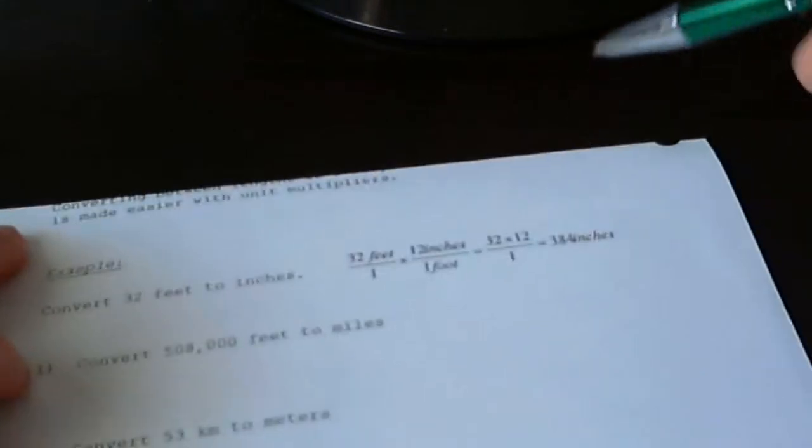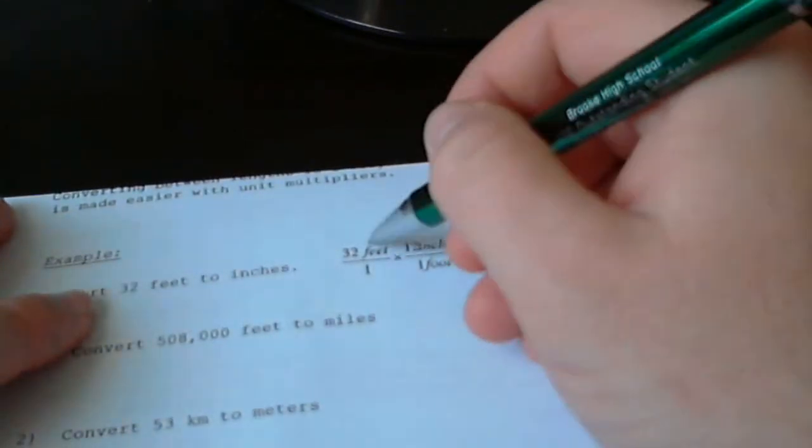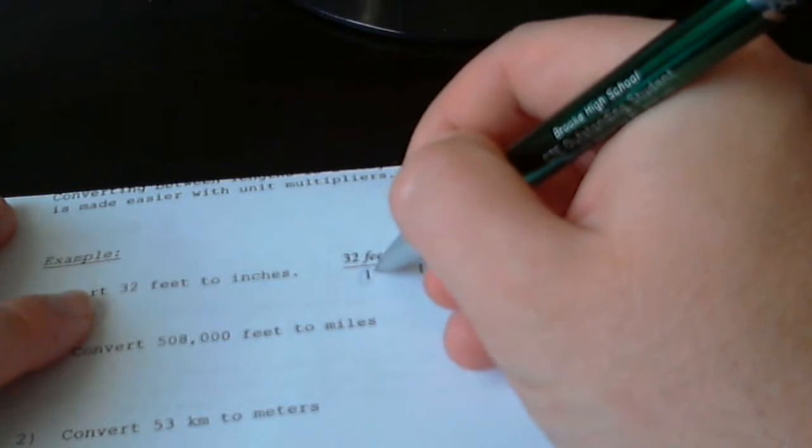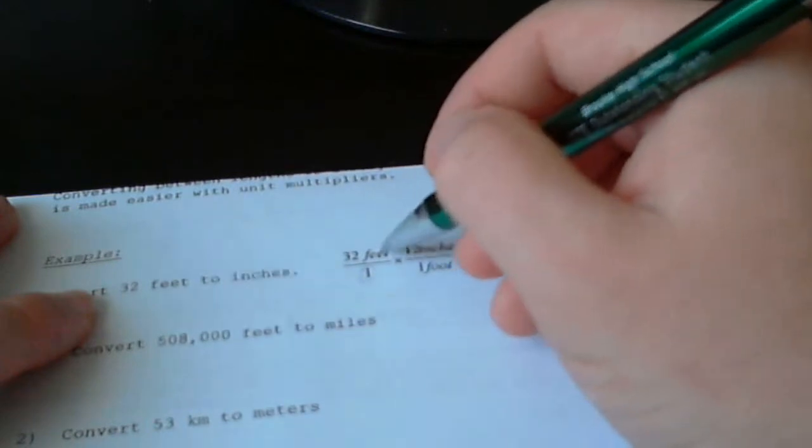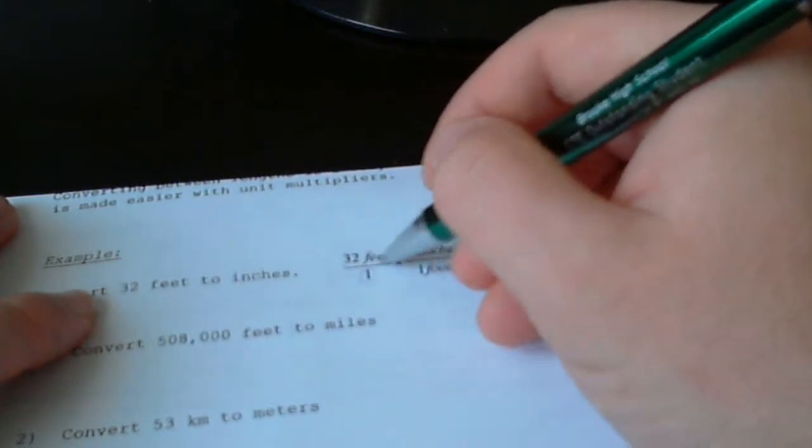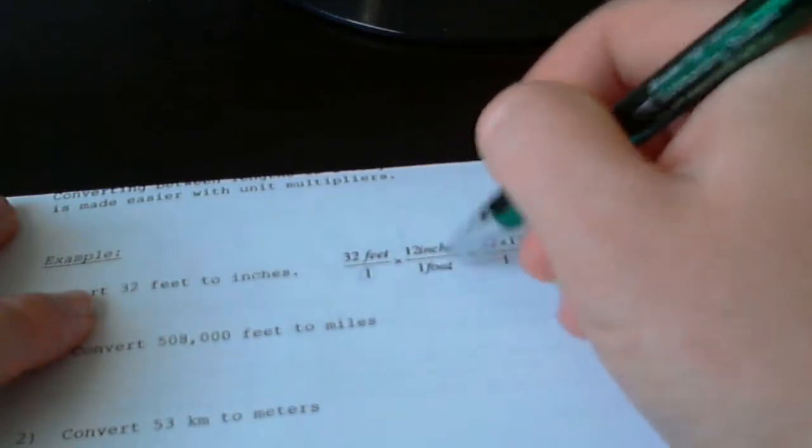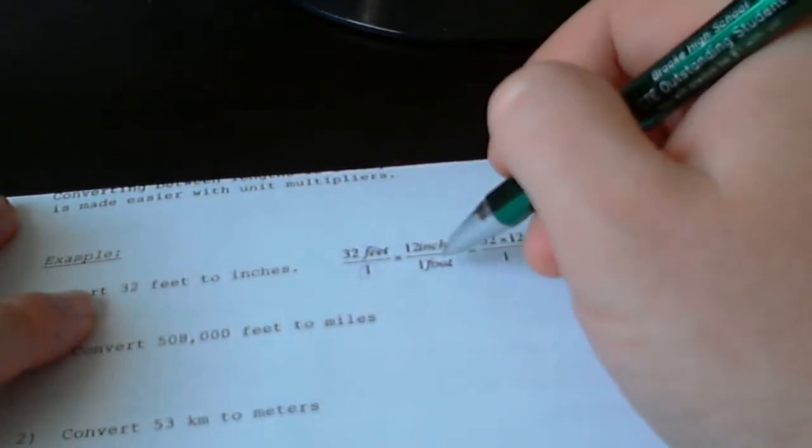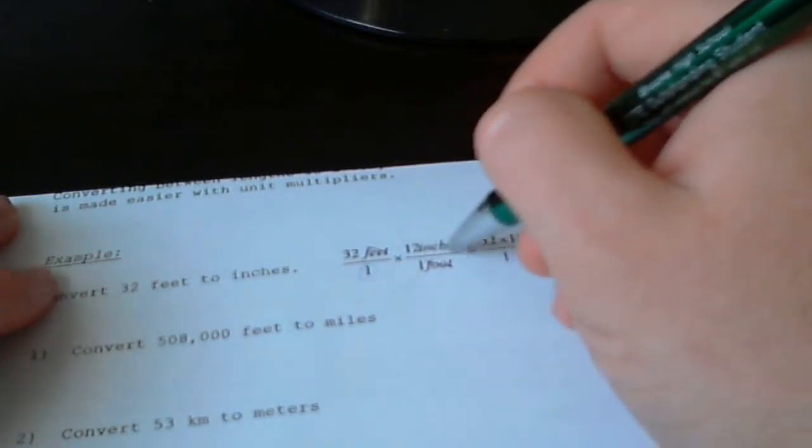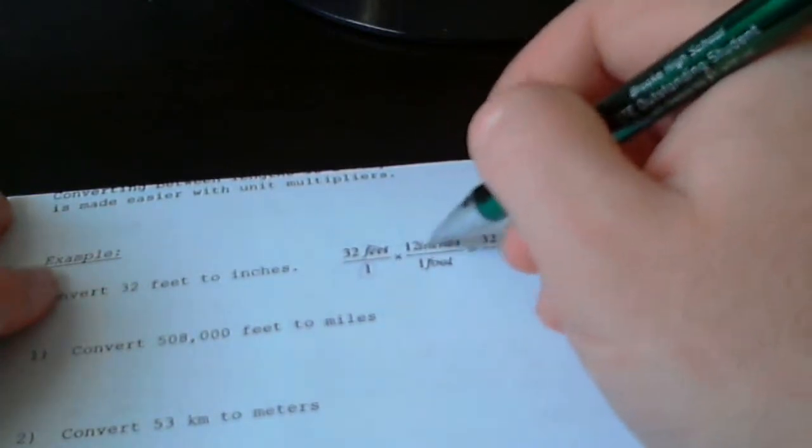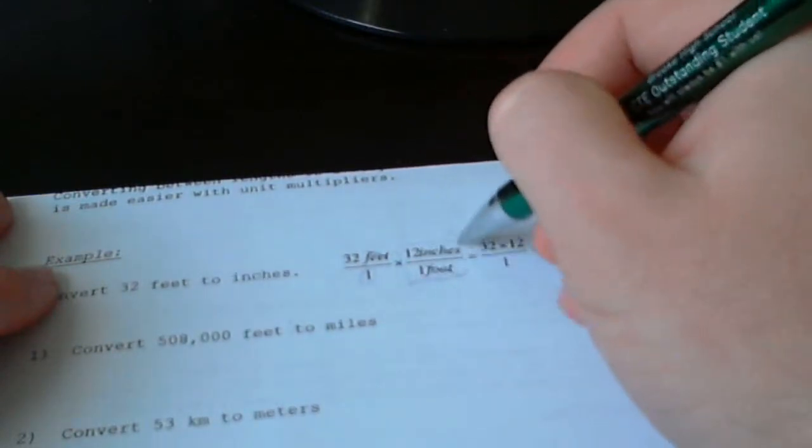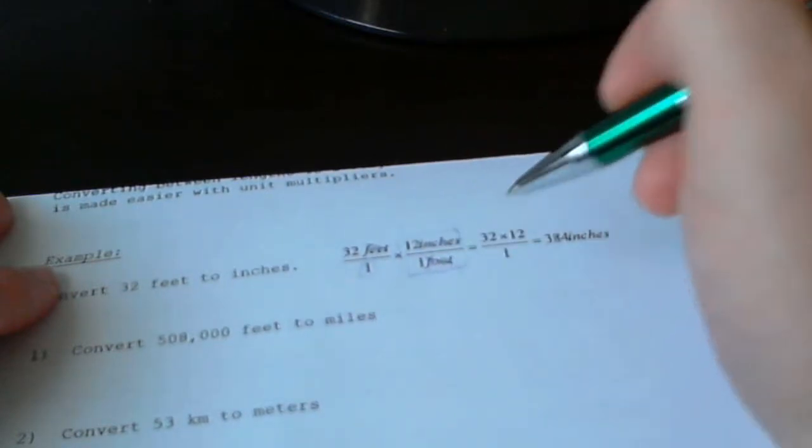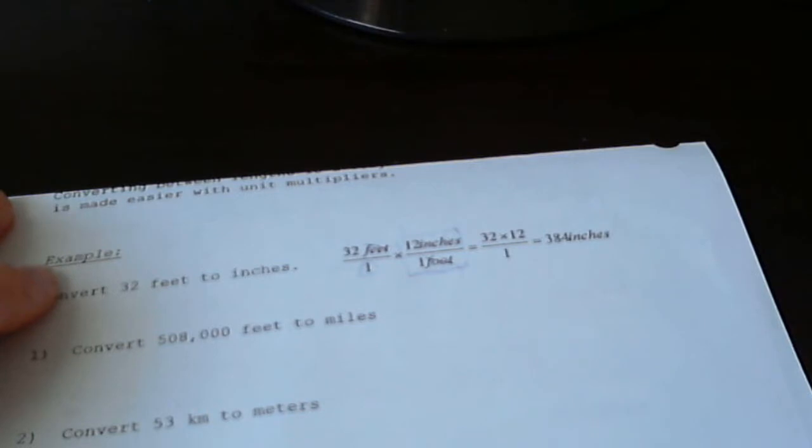Let's talk about converting 32 feet to inches. Whenever we do these conversions, we always start with what we know over 1. So we have 32 feet over 1. The diagonals then must match. Notice how I have feet up here and 1 foot down here - that's because we're going to cancel those. And my unit that I'm trying to convert to is on the top, inches. 12 inches and 1 foot - here's the unit multiplier. 12 inches is equal to 1 foot. Then we just simply multiply straight across the top.